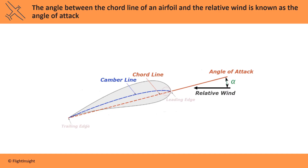Because the angle of attack is based on the direction of the relative wind, it is not something that can be determined solely by looking at the position of the wing or the motion of the aircraft. Simply put, we can't see angle of attack. This is one of the hard things about aerodynamics — you can't see it. It's based on wind.